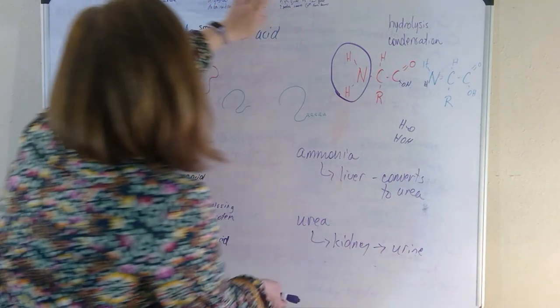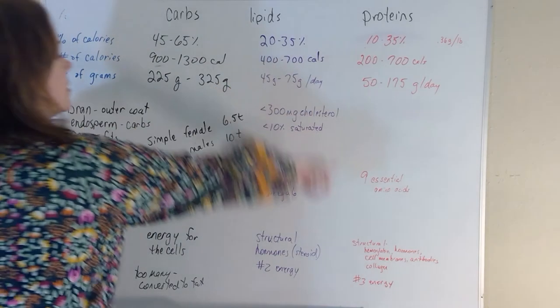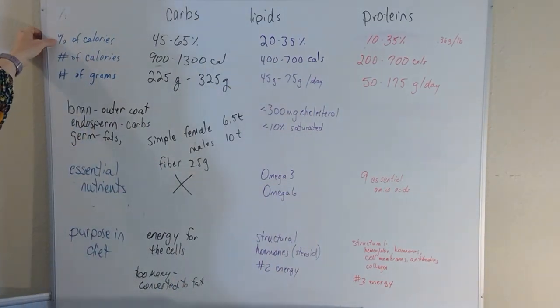Now let's look at our summary of our chapters four, five, and six. Proteins were in chapter six. We wanted to look at what percentage of your calories are supposed to be coming from proteins. 10 to 35% of the calories in your diet should come from proteins.